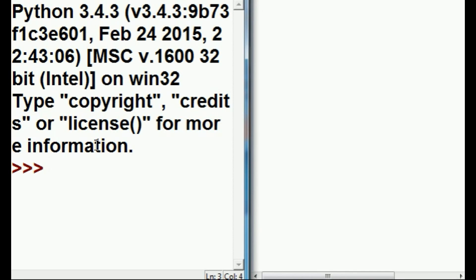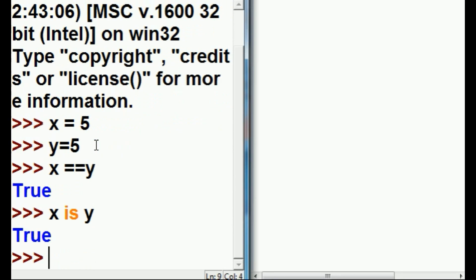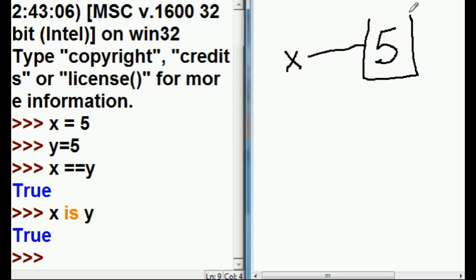First, let's take a look at integers. x equals 5, y equals 5, x equals equals y, of course it does. x is y, true. What is happening is, here in memory, x is pointing to 5, which is in memory, and y is also referencing the same spot. That's what's happening here.